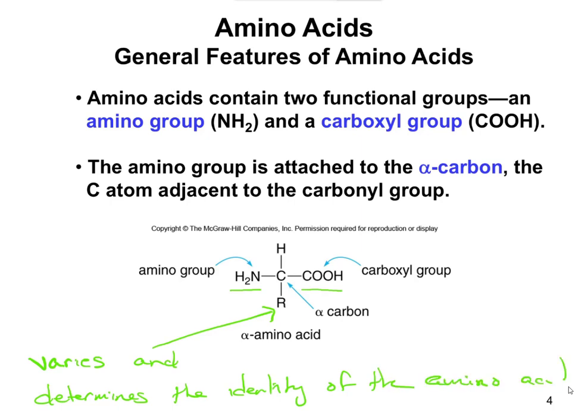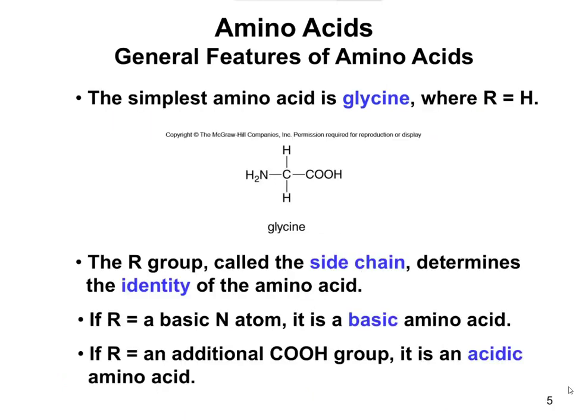To identify an amino acid, you look specifically at the R group. Your amino acid has an amine group (NH2), a CH attached to an R group, and then C double bonded to O bonded to OH — your carboxyl group. The simplest amino acid is glycine, where the side chain is just a hydrogen. In addition to glycine, there are 19 other amino acids, all with different side chains.